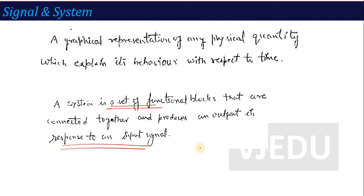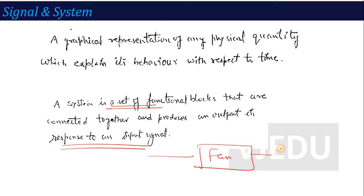For example, consider a fan as a system. There are many components in a fan — it is a set of functional blocks connected together. It produces a particular output, which is air, when you supply electric power as the input. So this is the form of a system.